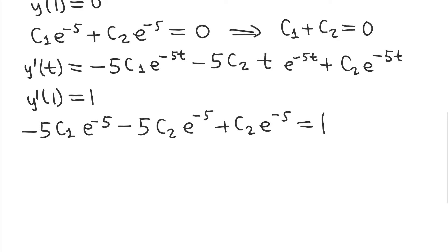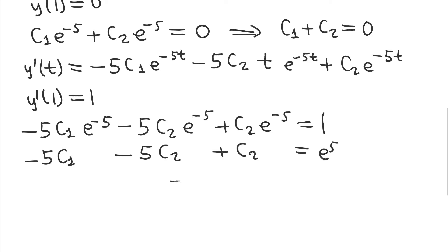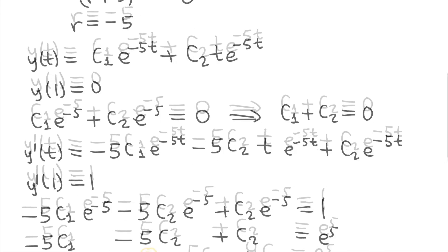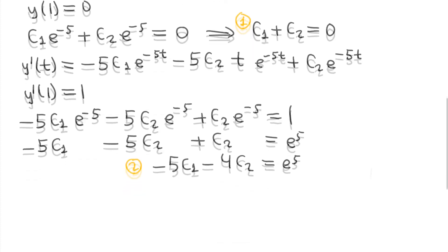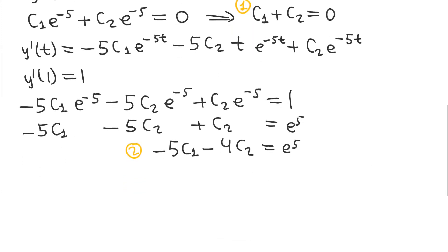Multiplying both sides by e^5, we get -5c1 - 5c2 + c2 = e^5. Simplifying the left-hand side gives us -5c1 - 4c2 = e^5. This is our second equation. Back up here was our first equation, so now we have two equations and two unknowns and we can solve for both c1 and c2.